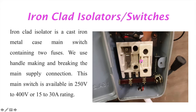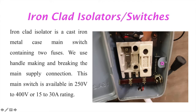The fuse rating depends on the total load of the house. You calculate the total load by adding all appliance power ratings. Say the total load is 1 kilowatt and the domestic voltage is 220V. Applying P = VI, the current is approximately 4 amperes. You should then choose a KitKat fuse with a 4-ampere rating.